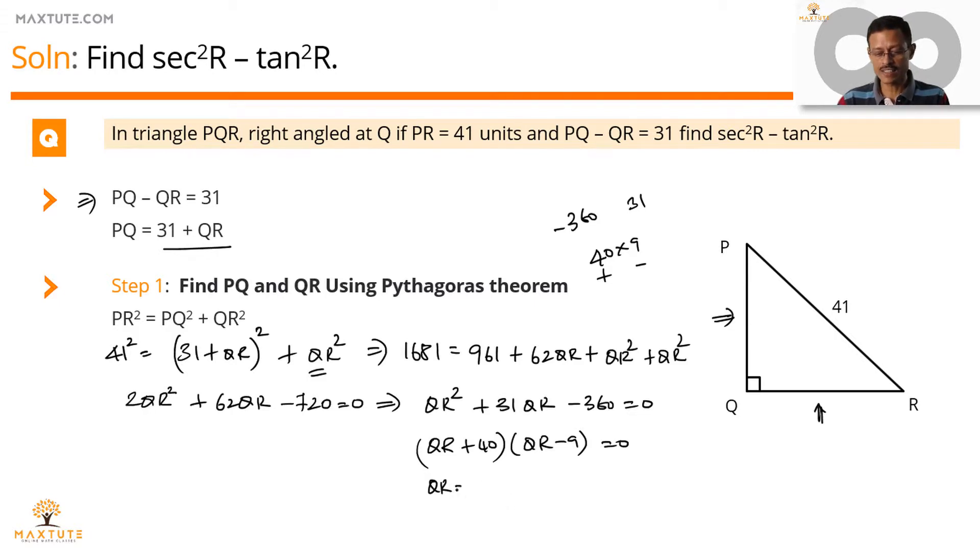Value of QR is either minus 40. The value of QR could also be equal to 9. Measures of sides cannot be negative, so this is infeasible. Measure of QR therefore equals 9 units.